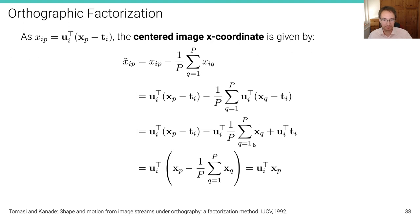Now, we have on the left-hand side here, we have ui transpose ti, negative. And on the right-hand side, we have ui transpose ti positive. So these two terms cancel. And so we're left with ui transpose xp minus ui, this expression, which we can summarize as ui transpose this expression here. And because we have assumed that the 3D points are centered, this expression here is zero. So we obtain ui transpose xp. So in summary, the centered image x-coordinates, assuming centered 3D coordinates, is x̃ip is simply ui transpose xp, a very simple relationship.